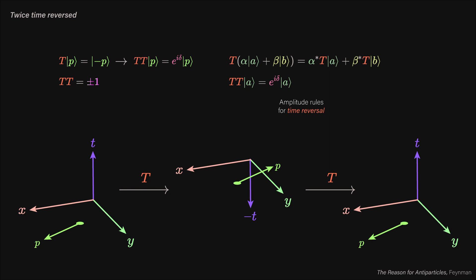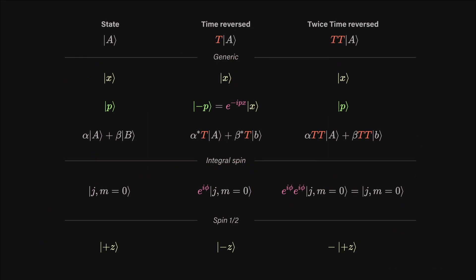Indeed, the time reversal operator is anti-unitary. Applying it twice gives us either 1 or -1. It's a mapping from i to -i. To accommodate this, we can write a generic superposition of states a and b and see how their amplitudes conjugate under time reversal and become a product of conjugate and normal amplitudes in twice time reversal.